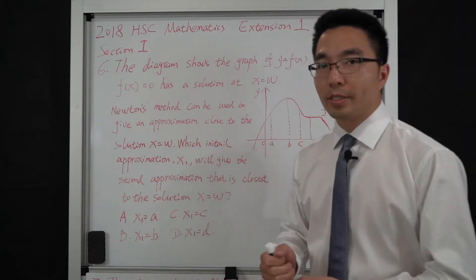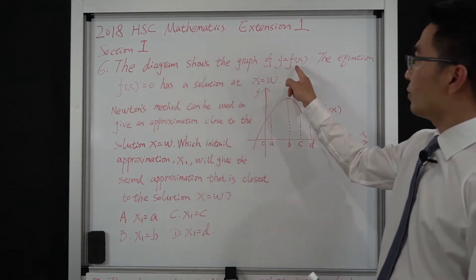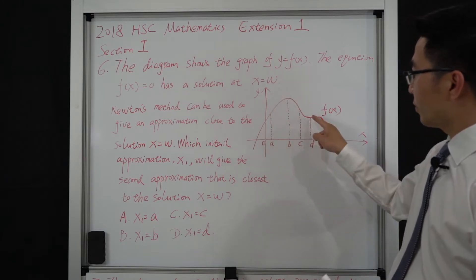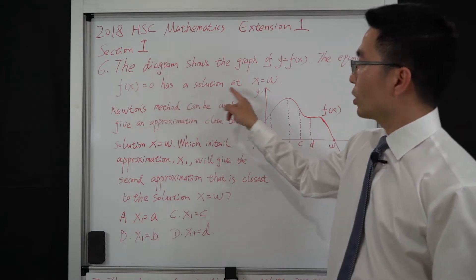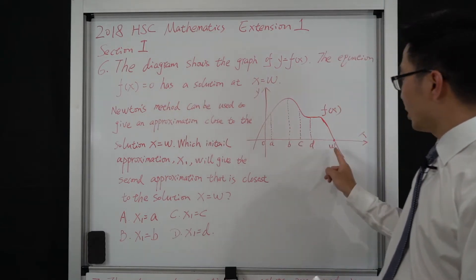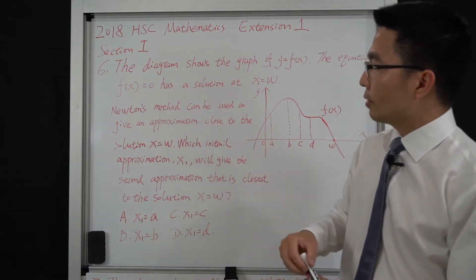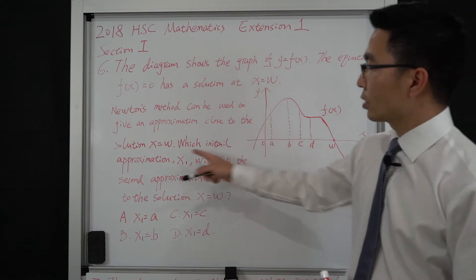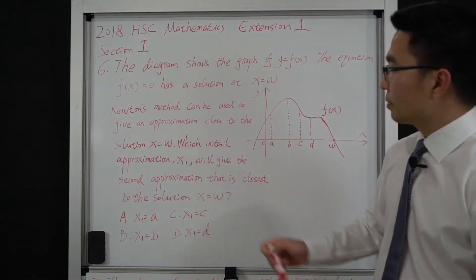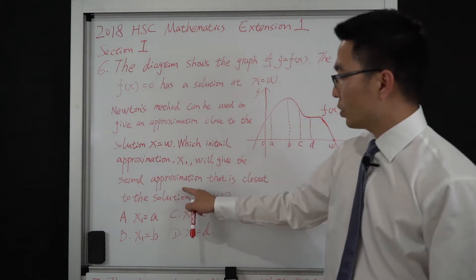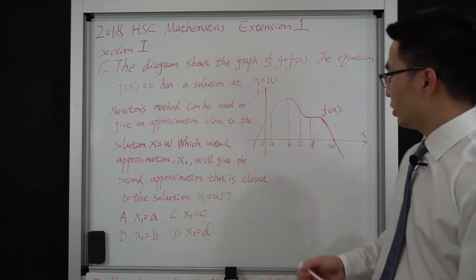Here is question 6. The question is: the diagram shows the graph of the function y equals f(x). The equation f(x) equal to 0 has a solution at x equal to w at this point. Newton's method can be used to give another approximation close to the solution of x equal to w. Which initial approximation x₁ will give the second approximation that is closest to the solution of x equal to w at this point?